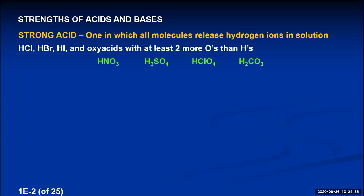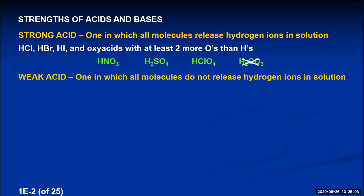Carbonic acid, H₂CO₃, has three O's and two H's — it only has one more O than H. So it is not a strong acid. If you put 100 carbonic acid molecules in water, all 100 do not ionize — only some small number ionize, producing only a few hydrogen ions in solution. Therefore, carbonic acid is a weak acid — one in which all molecules do not release hydrogen ions. All acids other than the ones outlined as strong acids would be weak acids.